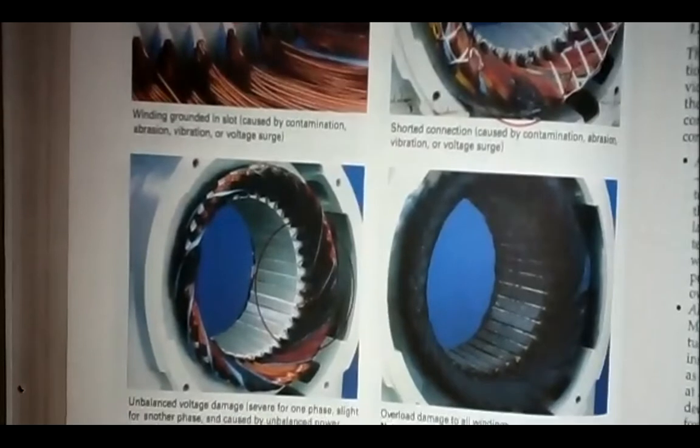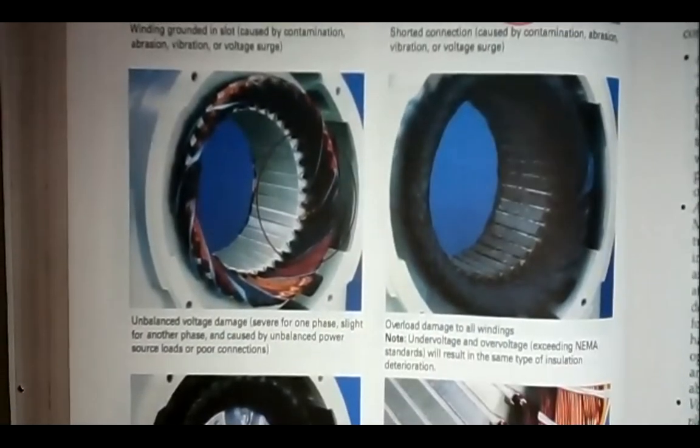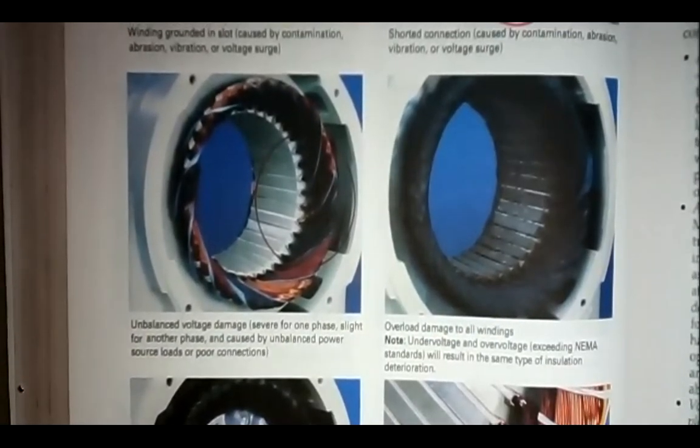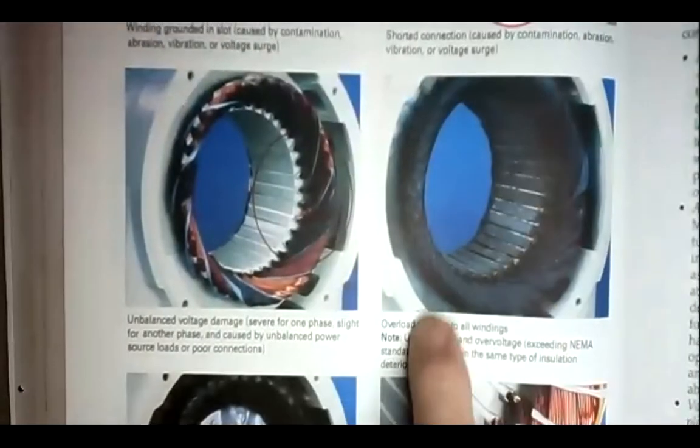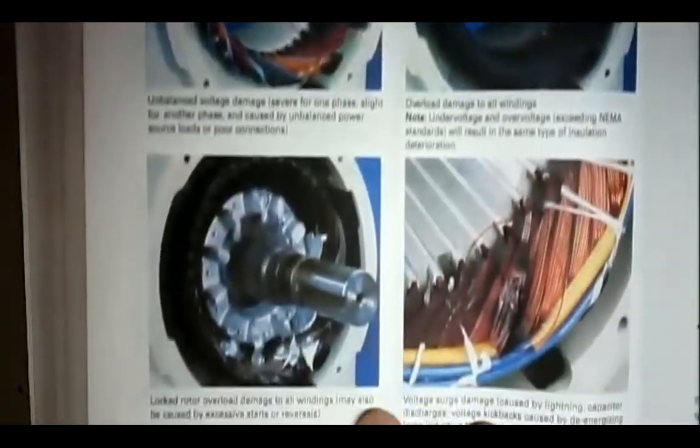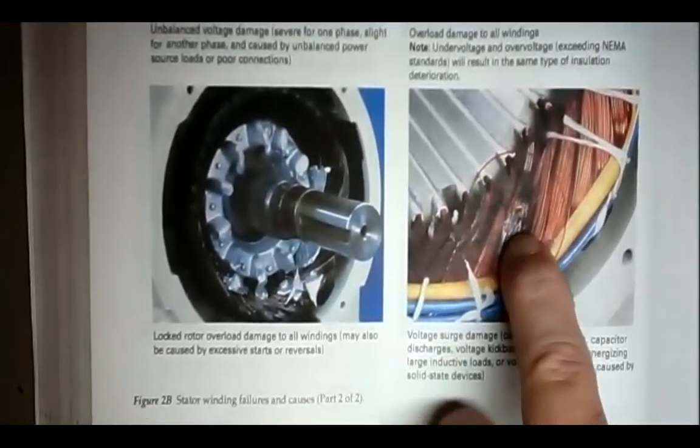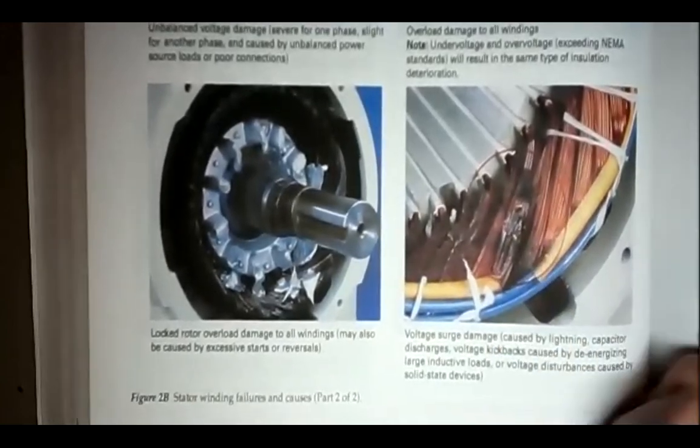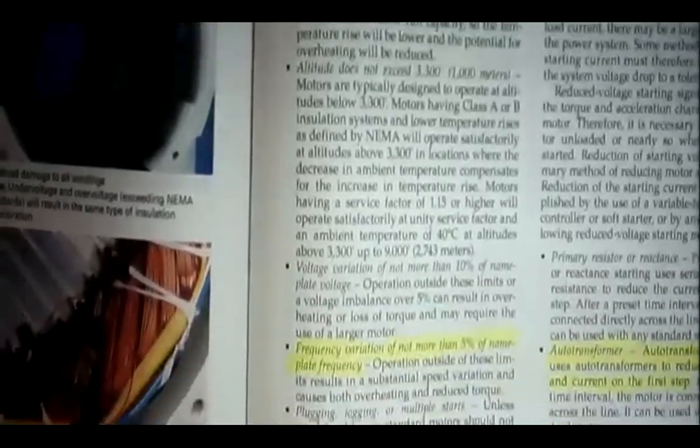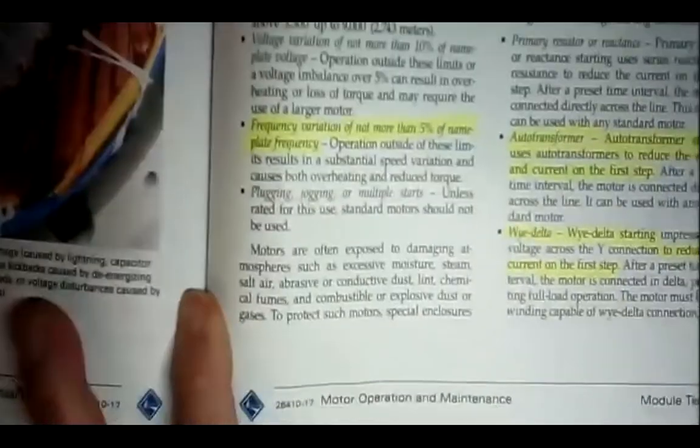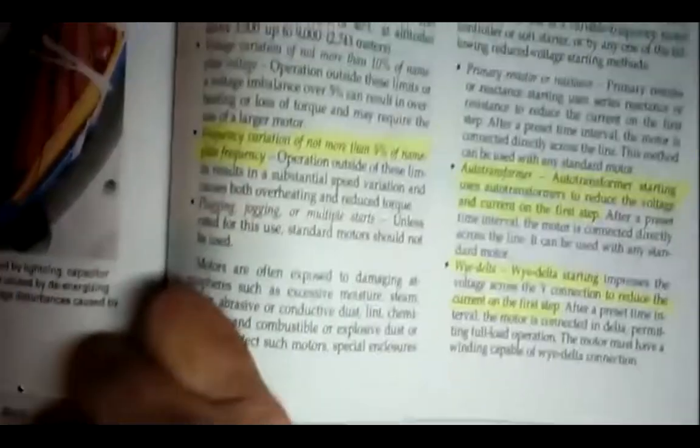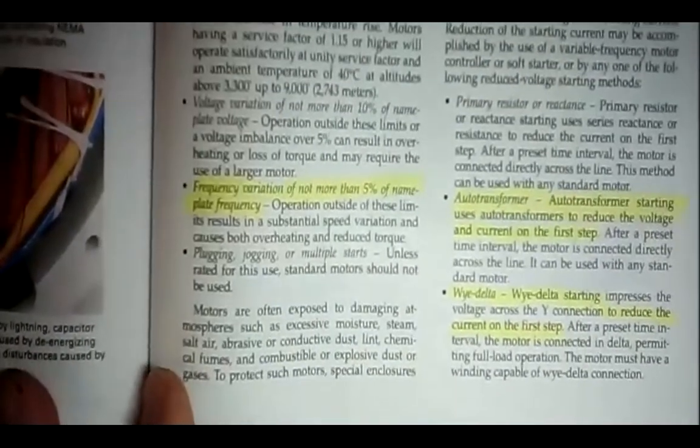Over on page four, they're showing us other damaging. There's a lot of carbon buildup in this one. This one has a shorted winding, so there are all different types of problems you can have. On page five, on the left-hand side, down almost to the very bottom of page, second bullet up, frequency,